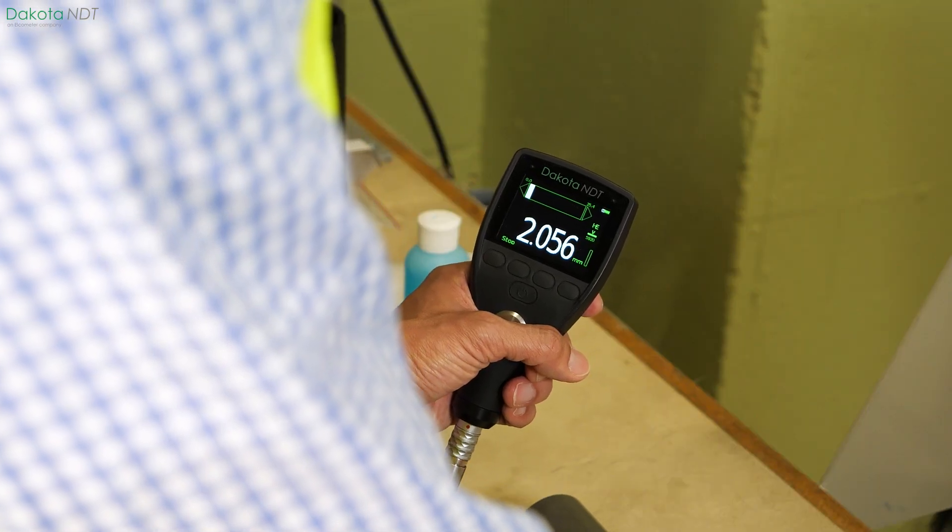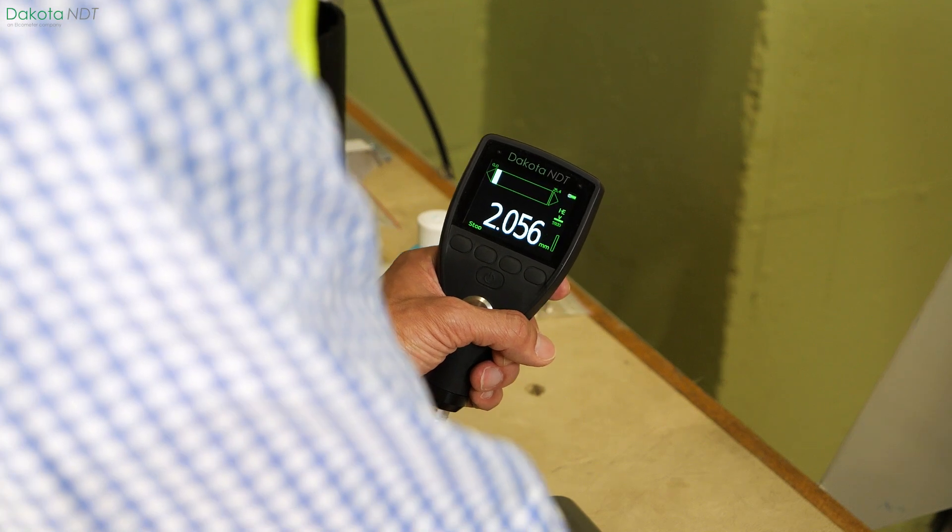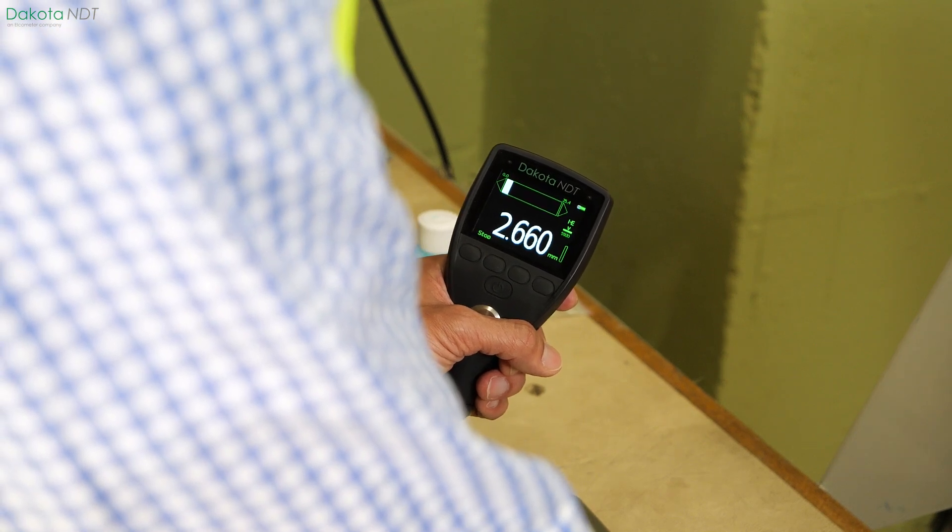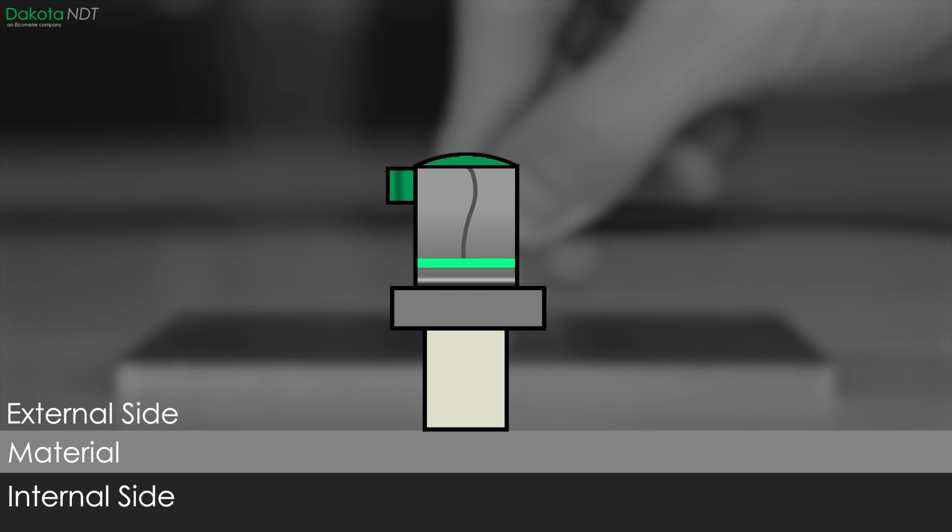This is why when using a Dakota NDT PCX, single element transducers use a delay line to increase the time between the pulse being sent and the echo being received.